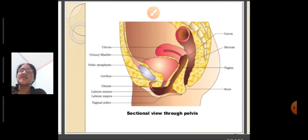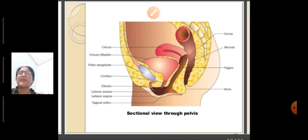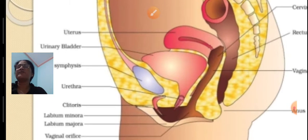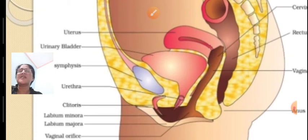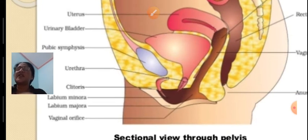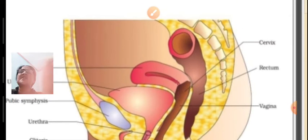This is the sectional view through the pelvis. The pelvic region is the lower abdominal region. In this view, we are able to see the various parts: uterus, urinary bladder, urethra, clitoris, labia minora, labia majora, vaginal opening, anus, vagina, rectum, and cervix — all parts of the female reproductive system.